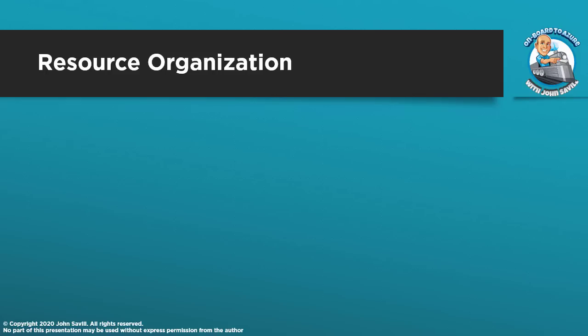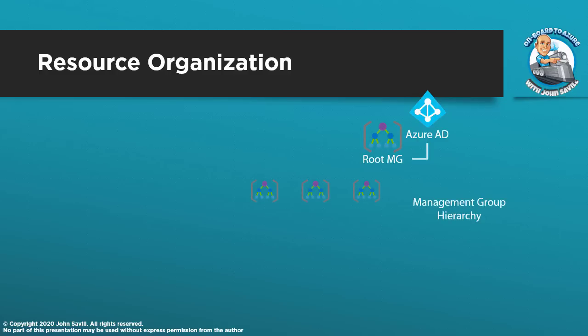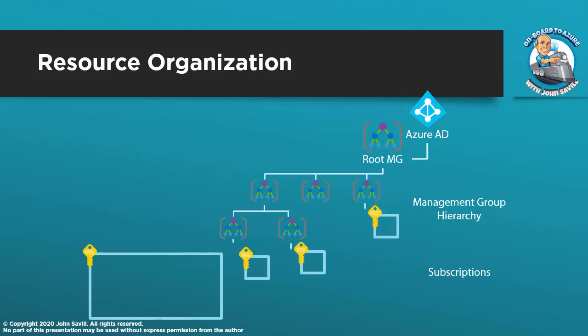Now let's think about the actual organization of resources — what is the scope I can assign permissions at. I have an Azure AD instance for my organization — in my case savilltech.net. Underneath that, by default, there is a root management group. A management group is something we can use for access control, policy, and budgets. I can create a whole hierarchy. This management group hierarchy maps whatever you want to do in terms of management structure — be it policy application, access control, or budgets.